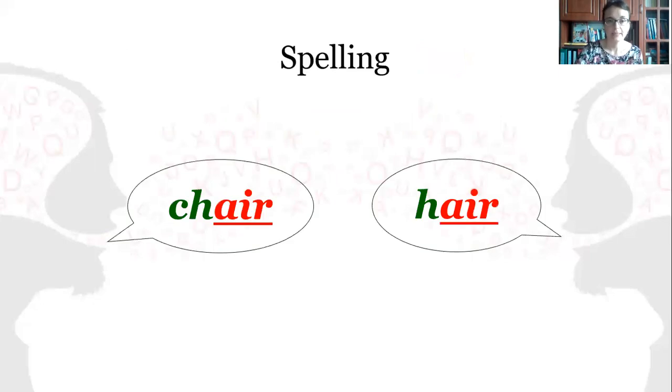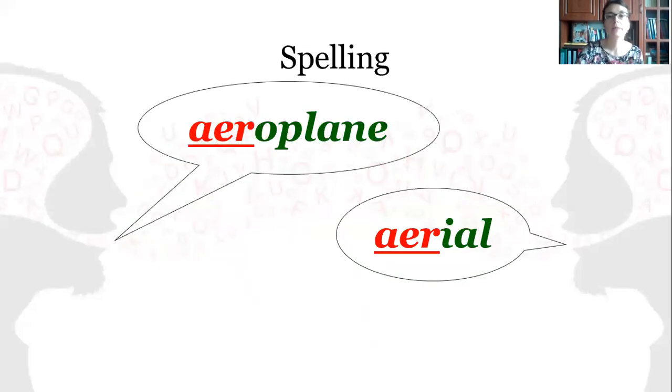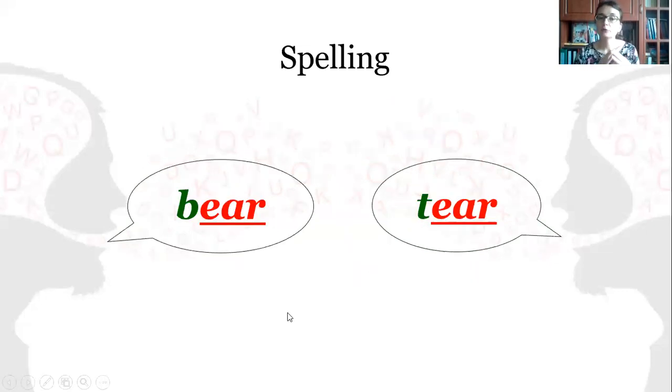How is it spelled? With the help of A-I-R as in chair, hair, with the help of A-E-R as in aeroplane, aerial. I'd like to draw your attention that this is the British spelling of the airplane.